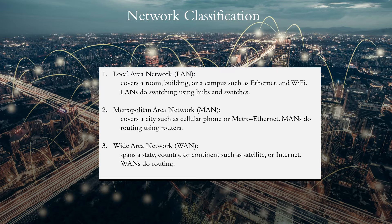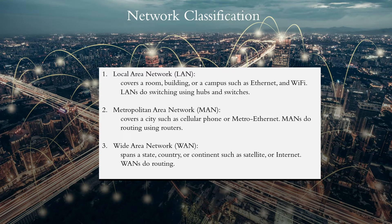LANs cover a room, set of rooms in a building, or a group of buildings on a campus, such as Ethernet and Wi-Fi. A network that covers the area of a city with a high data rate and high reliability is called a metropolitan area network, or MAN. Cellular networks and SONET are common examples of MANs.